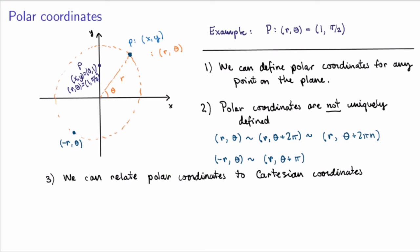The third thing I want to mention is that we can relate polar coordinates to Cartesian coordinates. If I have a point in the plane with polar coordinates (r, θ), how do I get the Cartesian coordinates x and y? If I draw a vertical line, we can read it off directly from the graph. The x-coordinate of the point will be given by r times cosine of theta, and the y-coordinate will be given by r times sine of theta. This relation is completely general, as you can prove — it's a good exercise. So if we know the polar coordinates, we can extract the Cartesian coordinates.